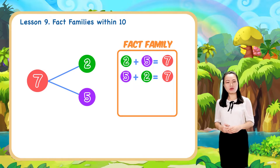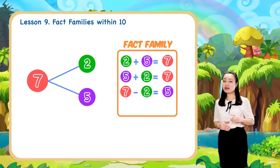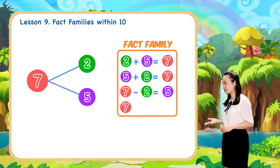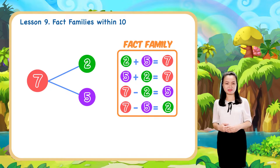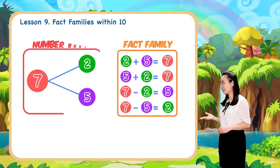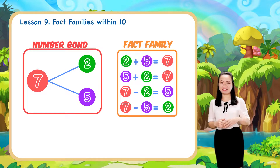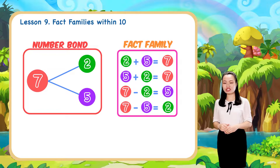Third, we have 7 minus 2 equals 5. Fourth, 7 minus 5 equals 2. So, you see, having this number bond, we can create the fact family that includes two addition facts and two subtraction facts. Can you see the relation between addition and subtraction here?